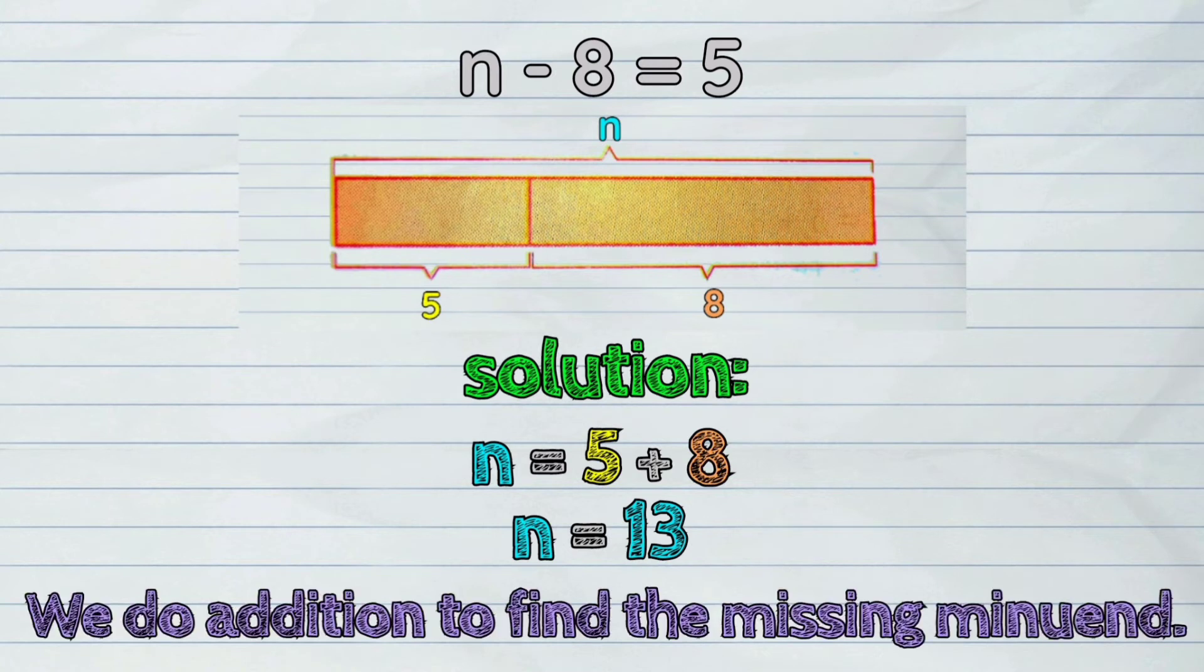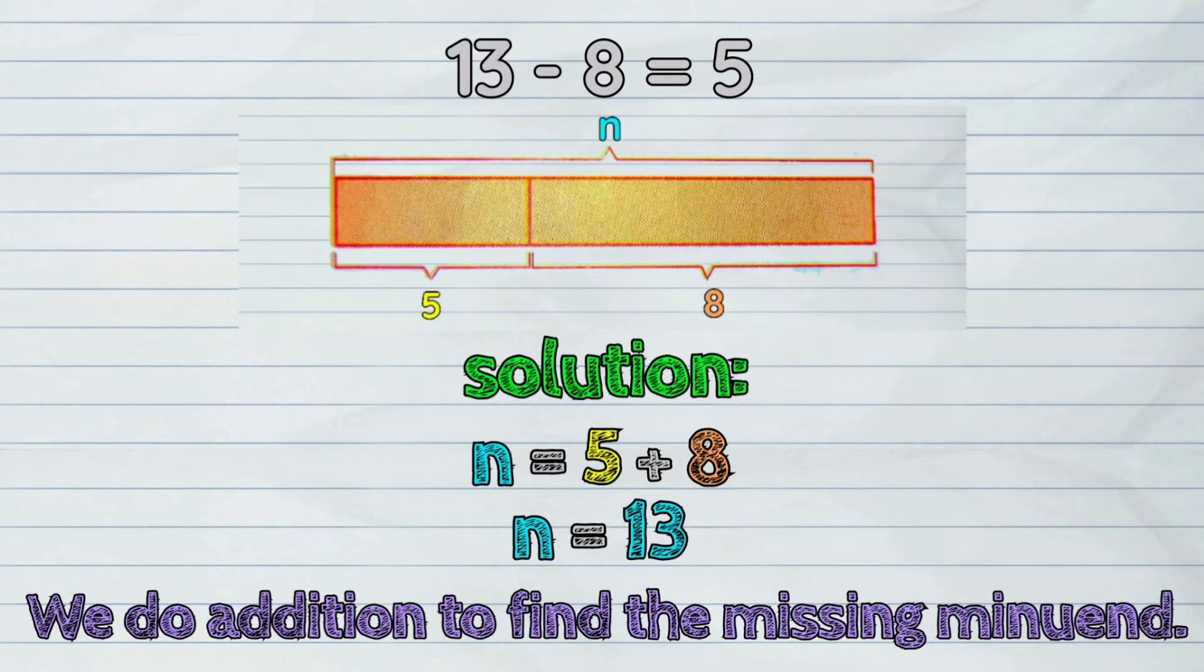Therefore, we can do addition to find the missing minuend. So, it's 13 minus 8 equals 5.